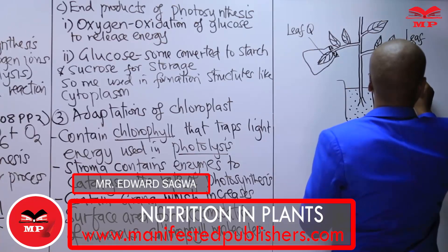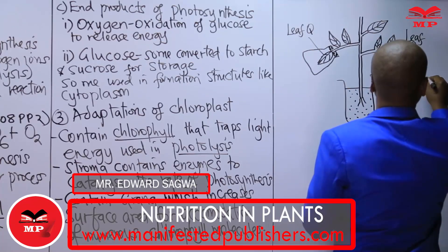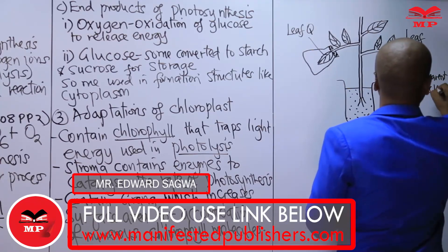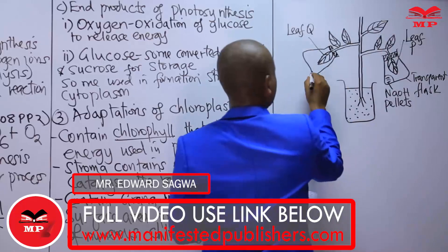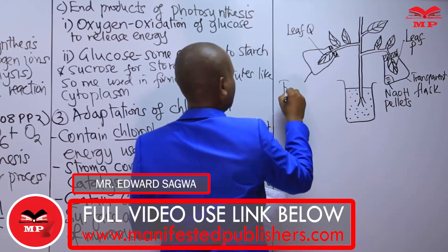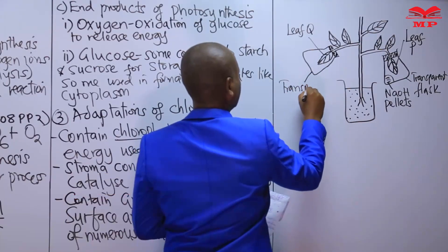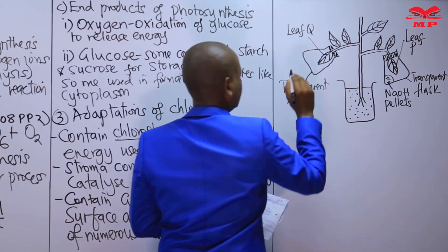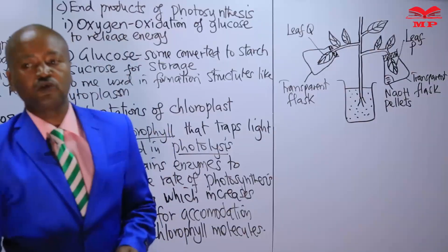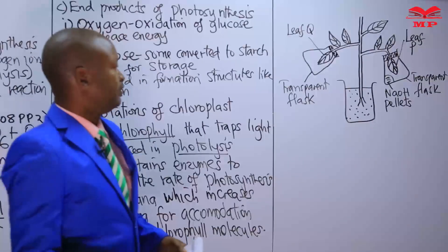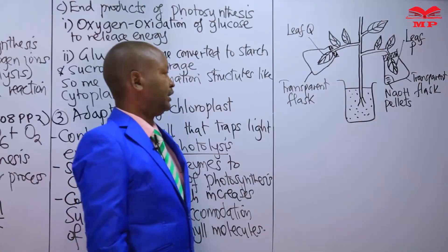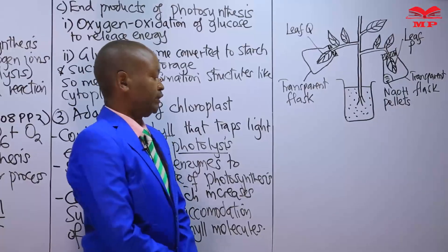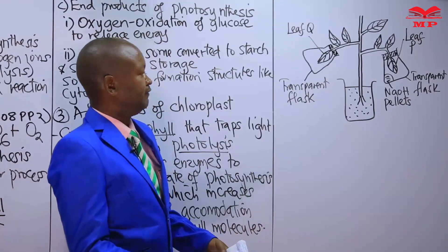This one is a transparent flask, and we also have another transparent flask on this side. Learners, let us understand that when we have photosynthesis taking place, we must have some factors that are being investigated. We are going to look at this question and see which factors are being investigated.